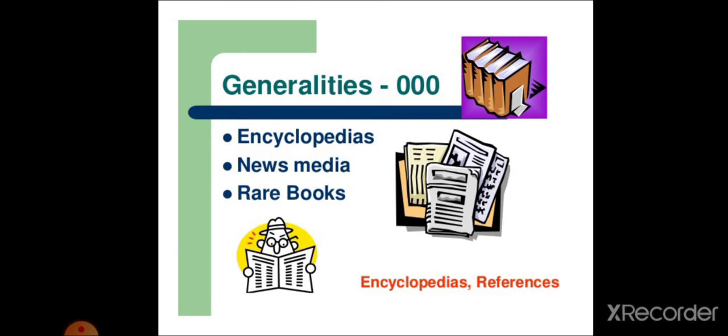First of all, encyclopedias and references are arranged in generalities, the number for which is 000. Encyclopedias, news media, rare books, all these things are arranged in this generalities category.